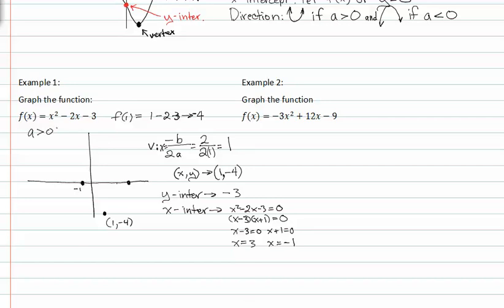So my x-intercepts are at -1 and 3. And I know it's an upward graph, and I know my vertex. So that's the graph. And remember that this point right here is my y-intercept when x equals zero, y equals -3.